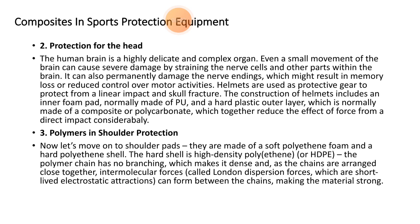Polymers are also used in shoulder protection through shoulder pads. They are made of soft polyethylene foams and a hard polyethylene shell. The hard shell is high-density polyethylene (HDPE). The polymer chain has no branching, which makes it dense and allows the chains to arrange tightly together. Intermolecular forces called London dispersion forces, which are short-lived electrostatic attractions, act between the chains, making the material strong.